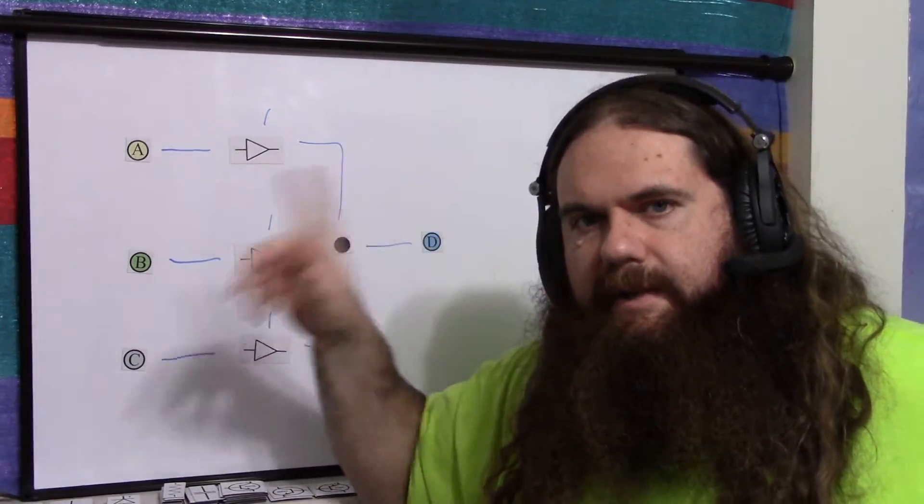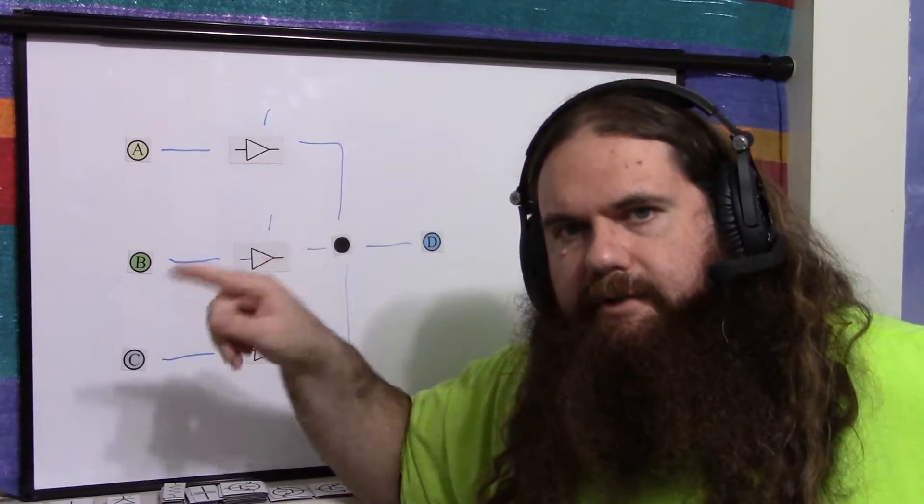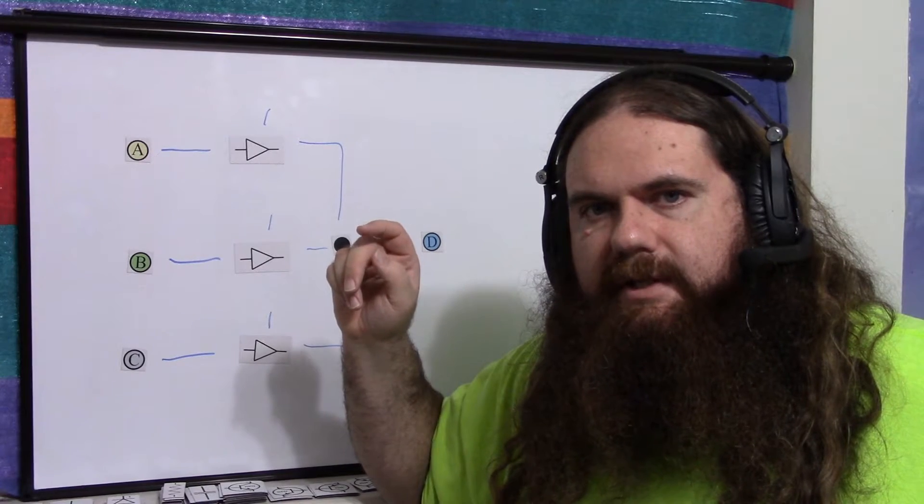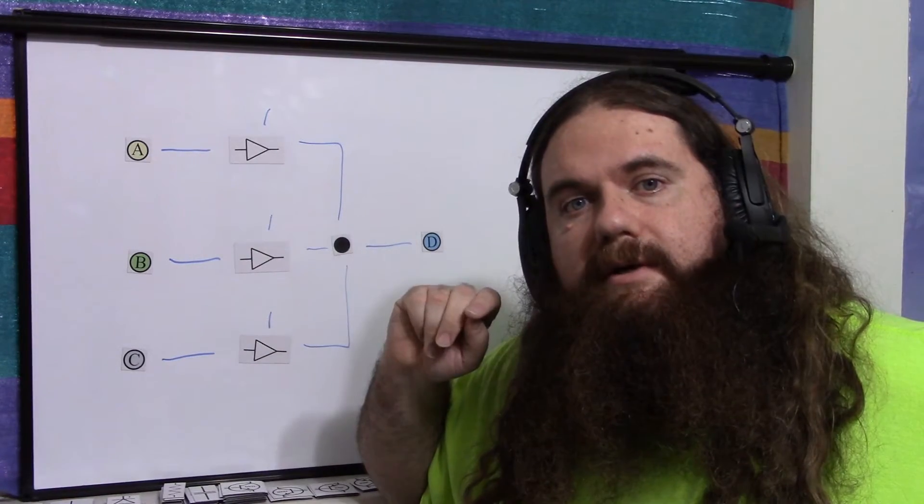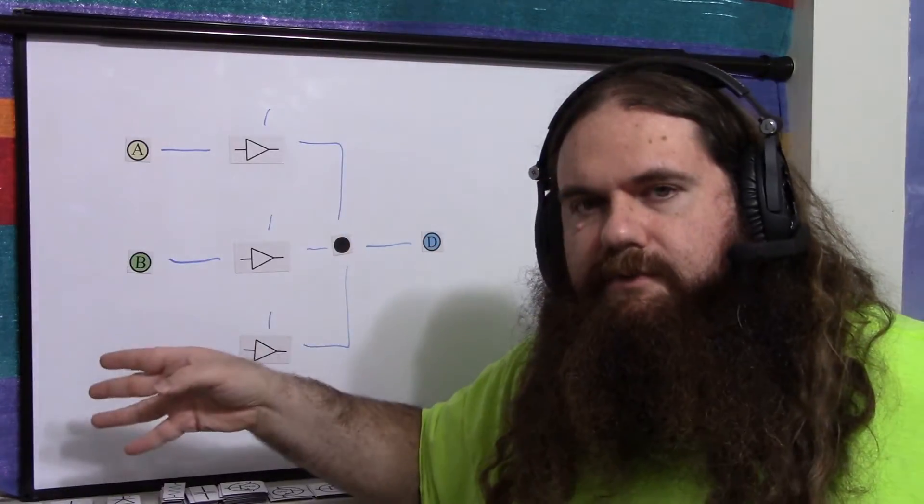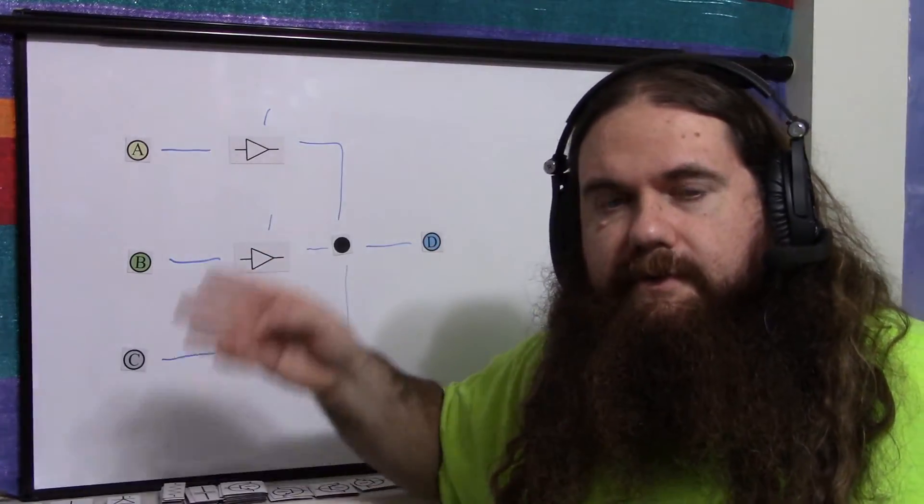And so you only need two pins. One pin to read, the other pin to keep signaling that thing. Increment, increment, increment. Every time the microcontroller wants to switch to the next device in line, just sends out a signal. So two pins can talk to not just 16, but any number. As big as you want that shift register to be. And you could hook multiple shift registers together.